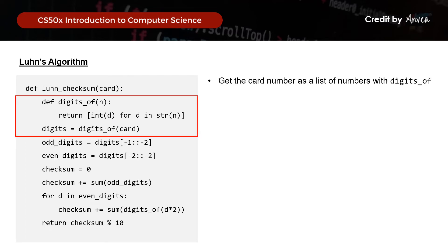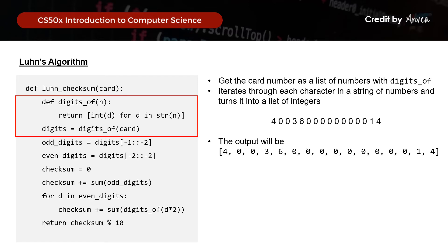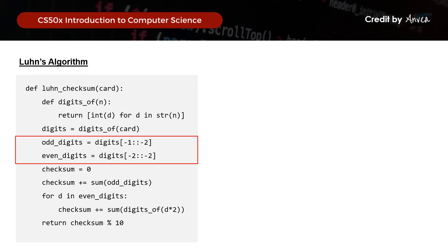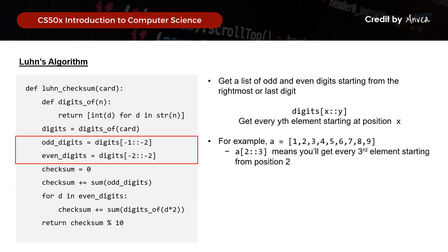For this section, we'll get the card number as a list of numbers using digits_of. What digits_of does is iterate through each character in a string of numbers and turn it into a list of integers. So someone who keys in a credit card number will have an output that is now a list of integers. For Luhn's algorithm, we need to get a list of odd and even digits starting from the last digit. This is where we introduce the double colon operator — x::y essentially means get every y-th element starting from position x. For example, given a list 1 to 9, a[2::3] gives you 3, 6, 9.